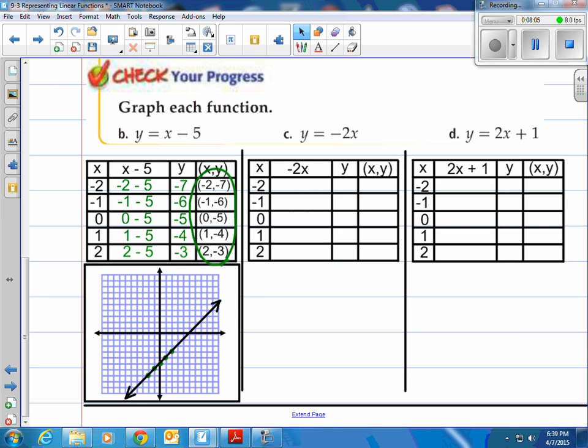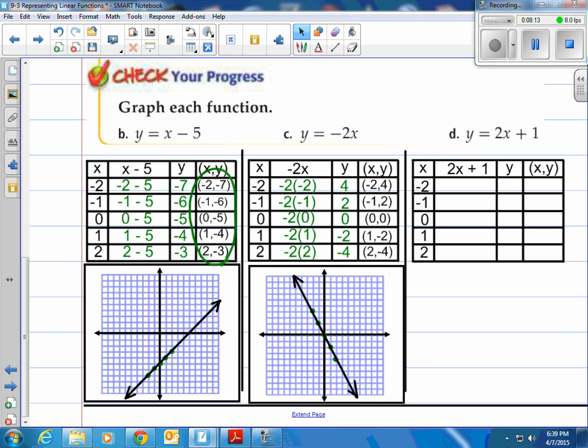Same with c here. Here's the table. Here are the values, and then here are the points generated on the line, graphed on a line, and then, of course, connected because they're all in a straight line, and they create that linear function y equals negative 2x.